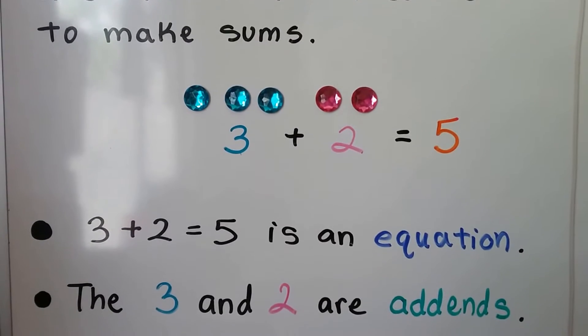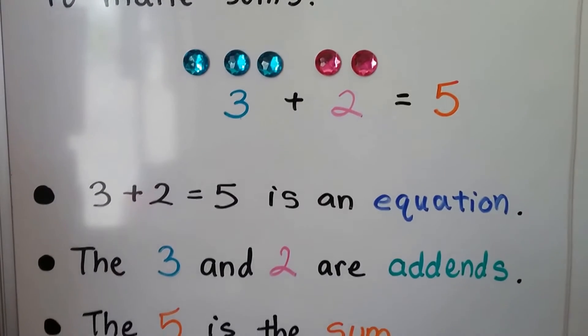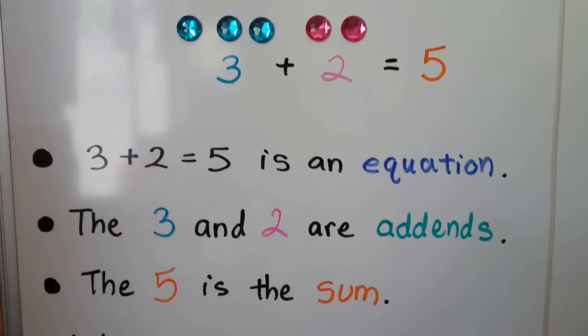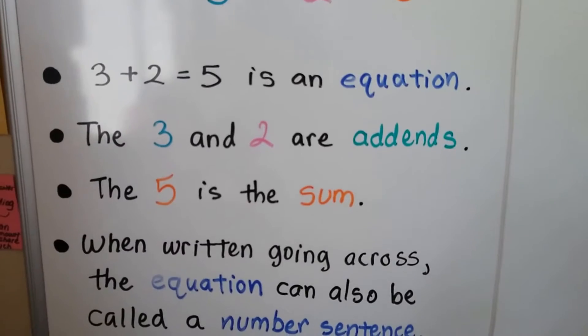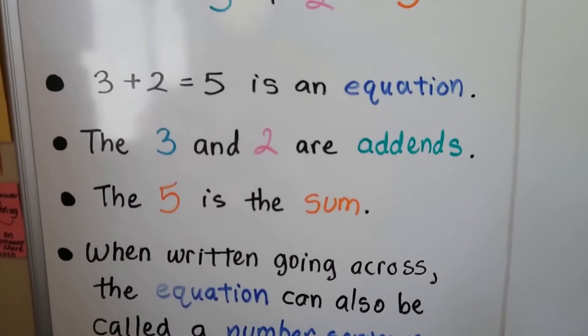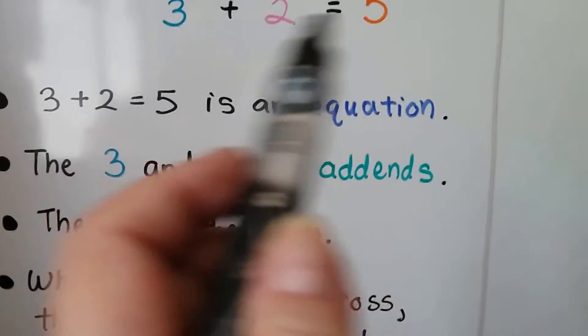And three plus two equals five is an equation. The three and the two are addends. The five is the sum. When written going across, the equation can also be called a number sentence.